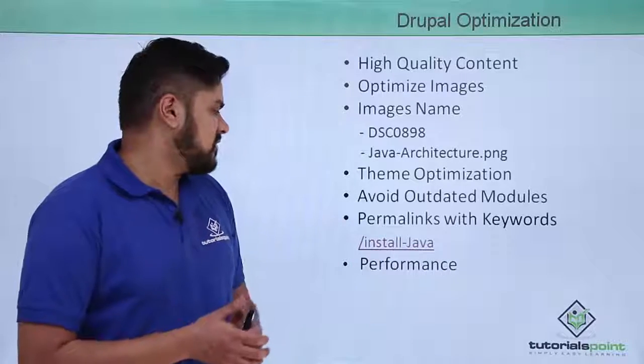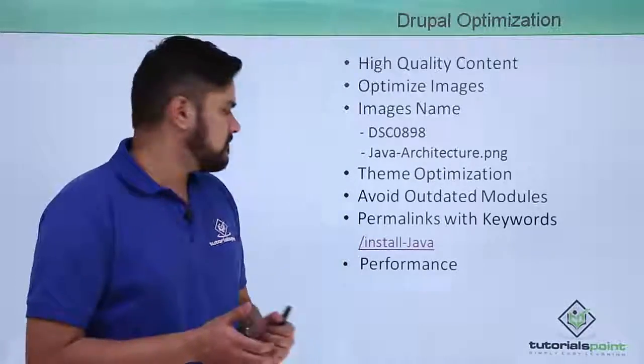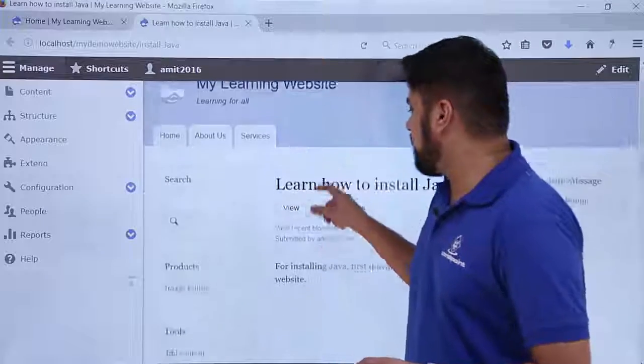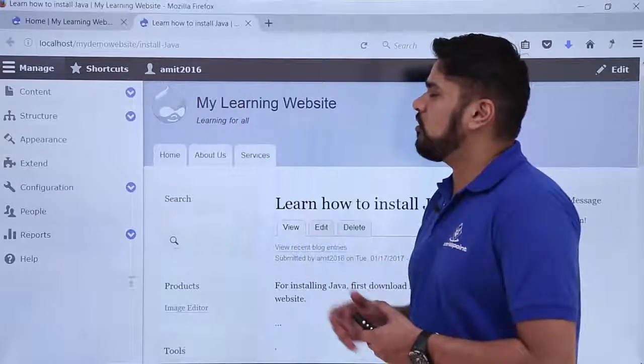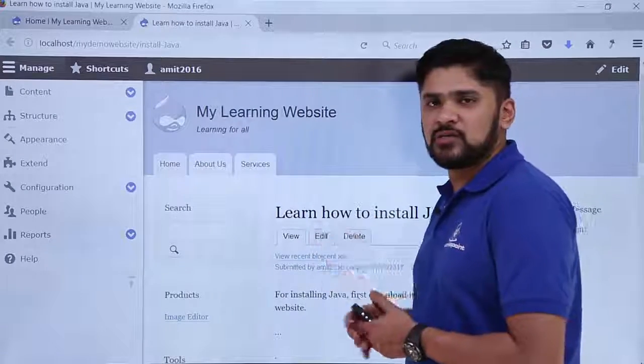The last one is performance. So let's go through the website and see where are the performance settings. For that click on the website. Here you can see the website is visible now. This was our content Learn How to Install Java. With the link install-java, we have also kept keywords under the link. So now we will see how we can optimize our website under the settings.